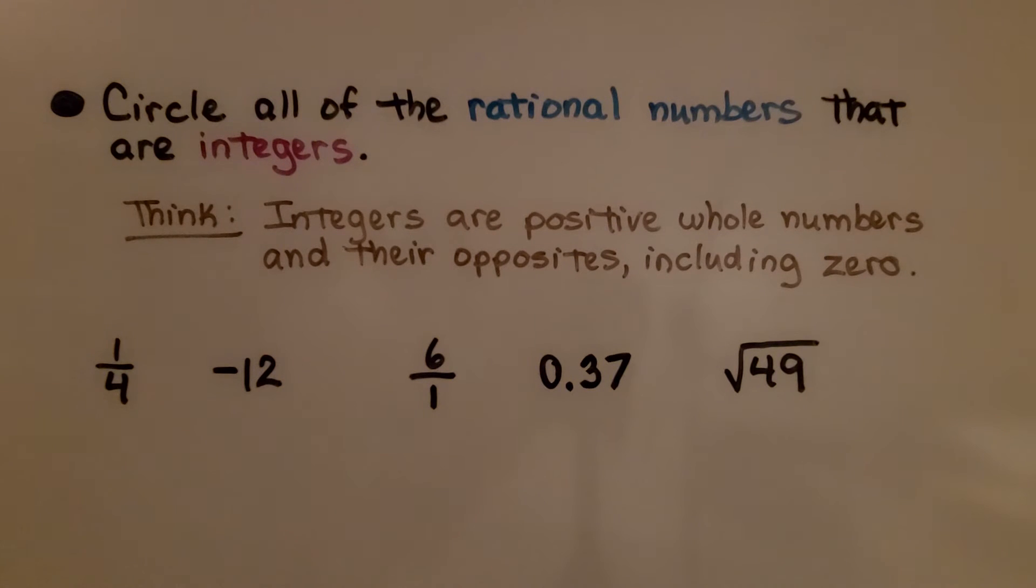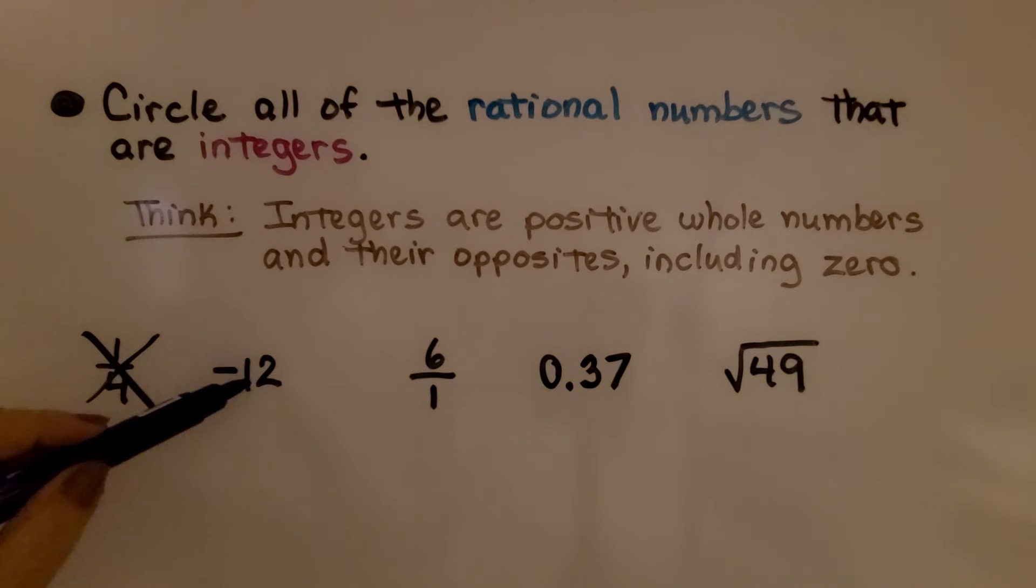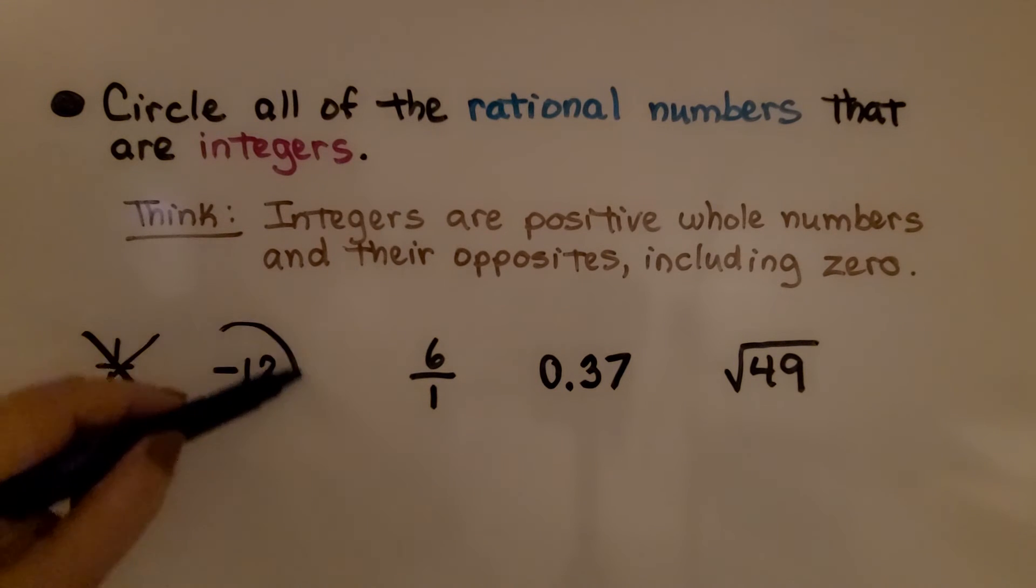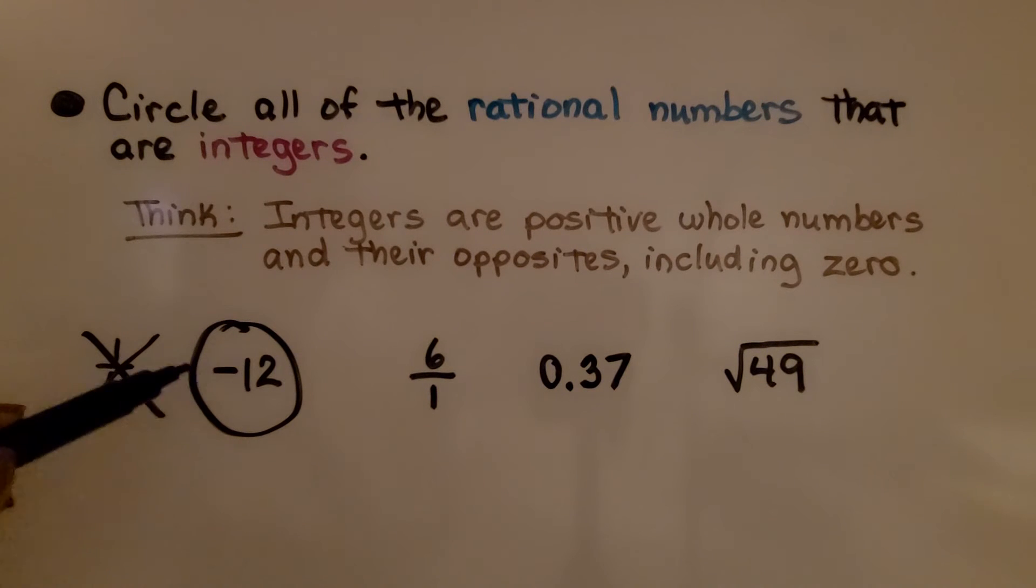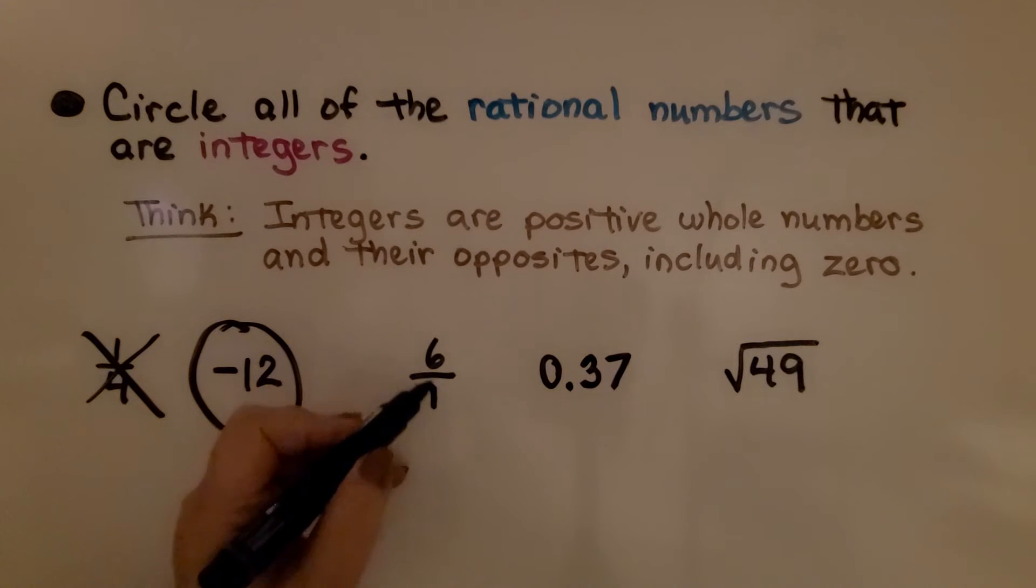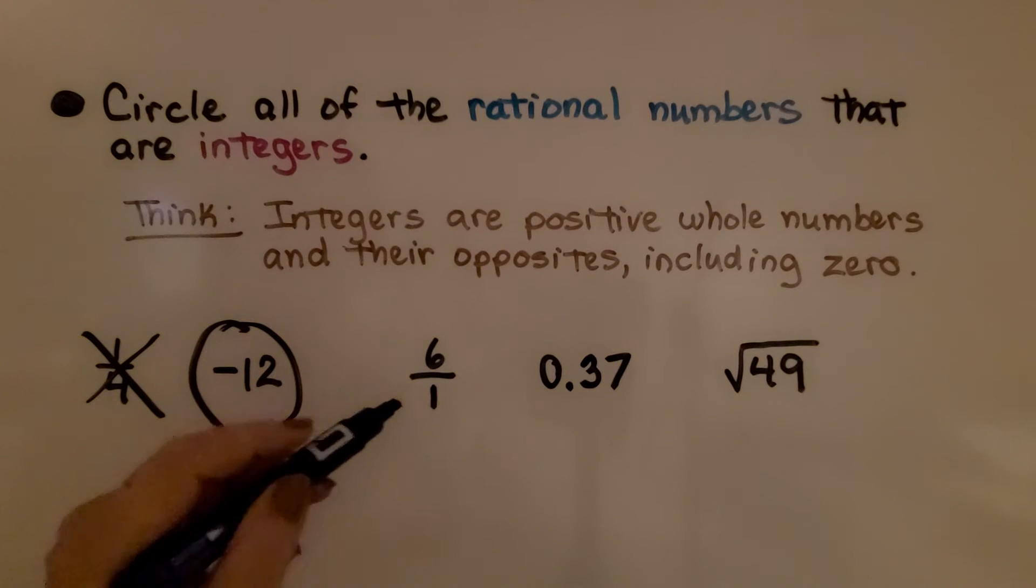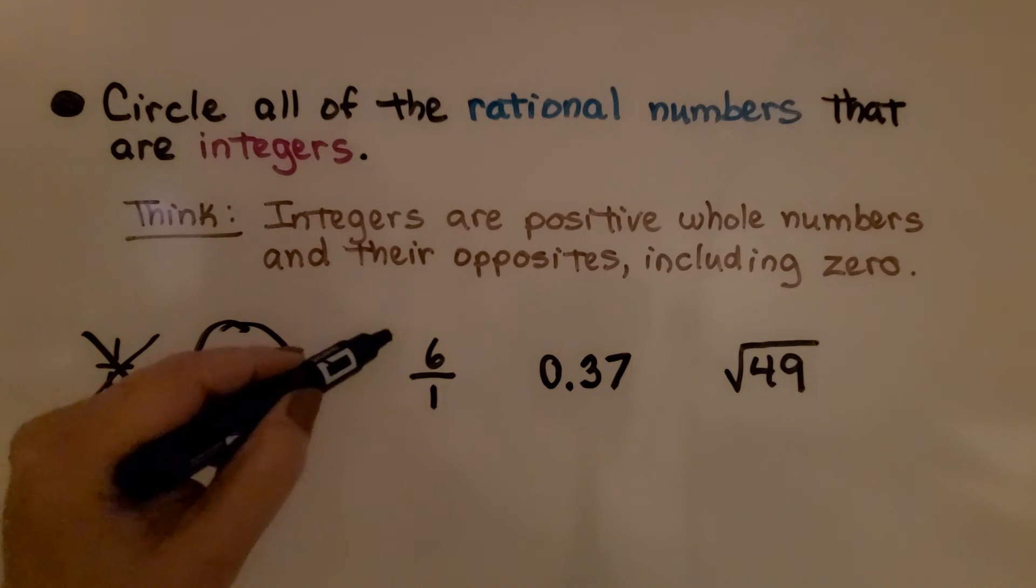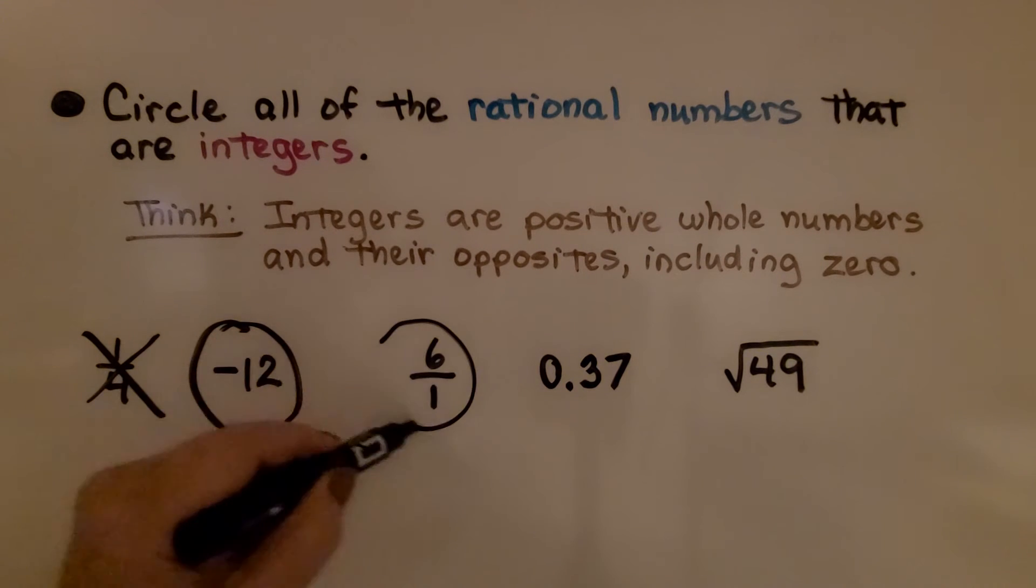So opposites means across 0 on the number line. Here we have 1 fourth. Well, that's not a whole number. That's a fraction. So it's not this one. Here we have negative 12. Well, that's the opposite of positive 12, which is a whole number. So yes, negative 12 is a rational number and it's an integer. Here we have this fraction, 6 over 1, but we know that that's a whole 6. It's just written as a fraction by writing it over 1. So that can be circled.